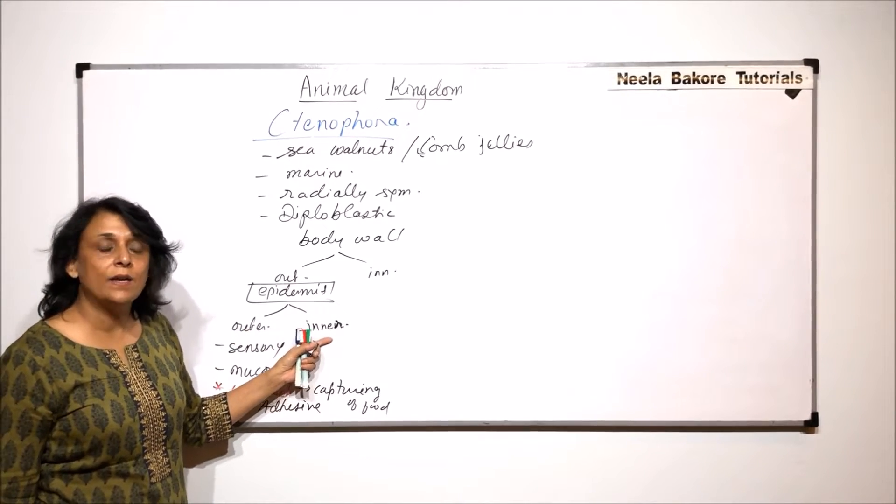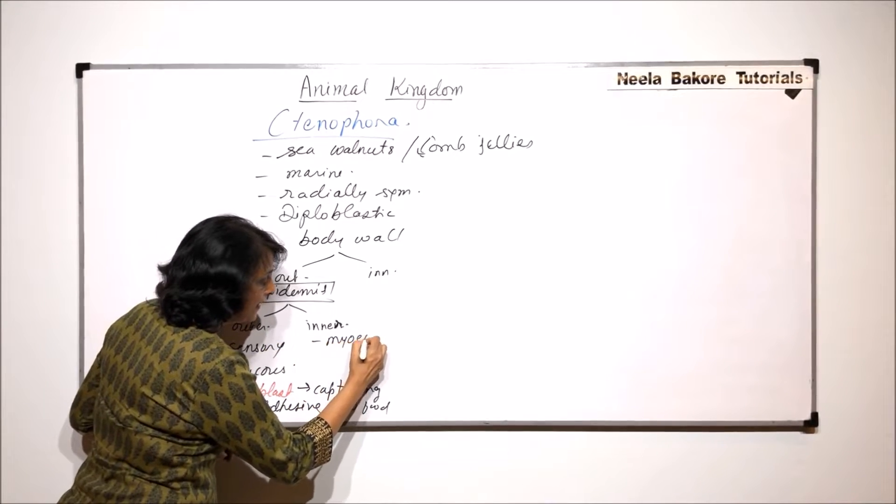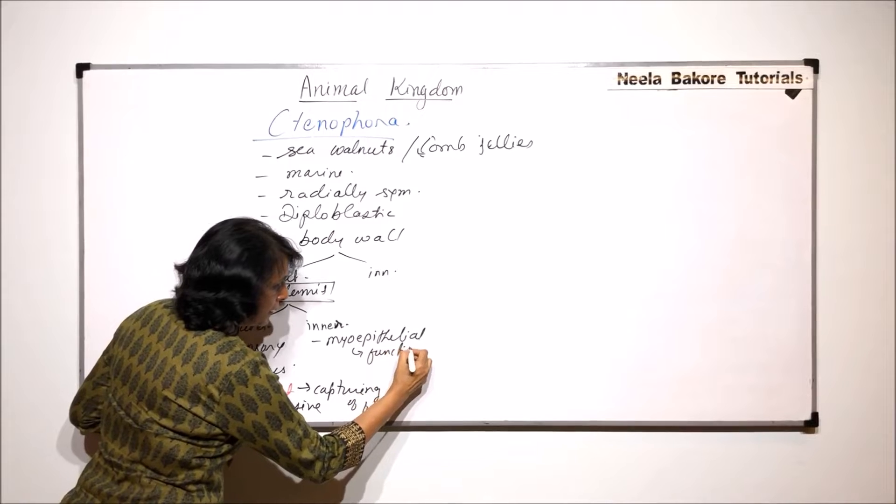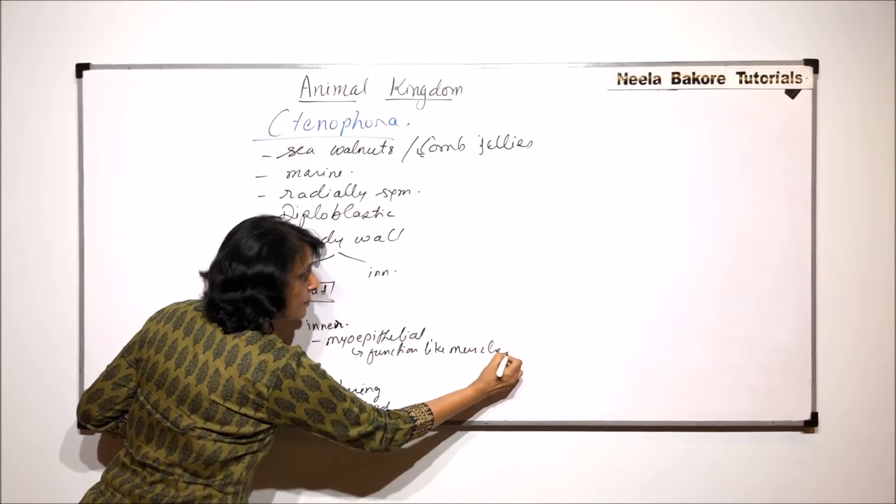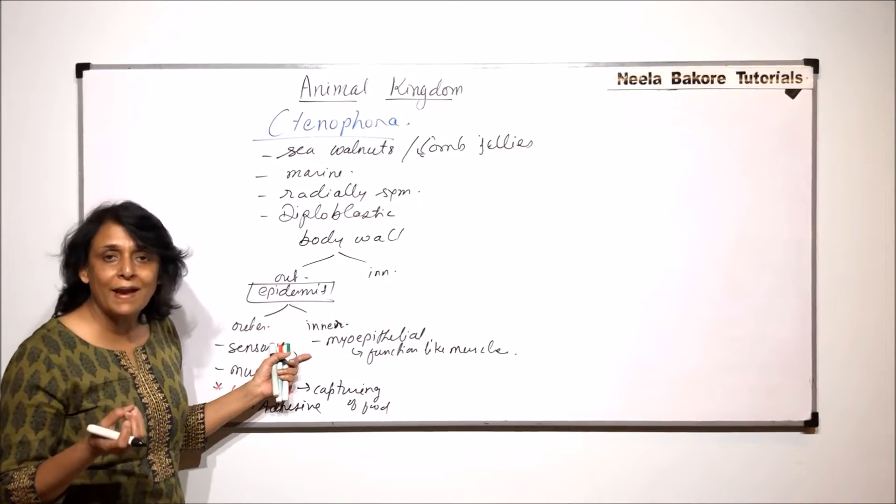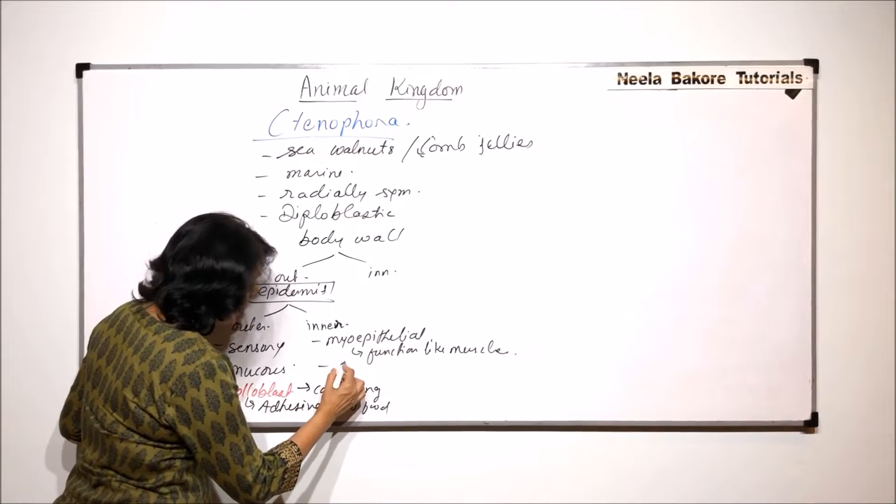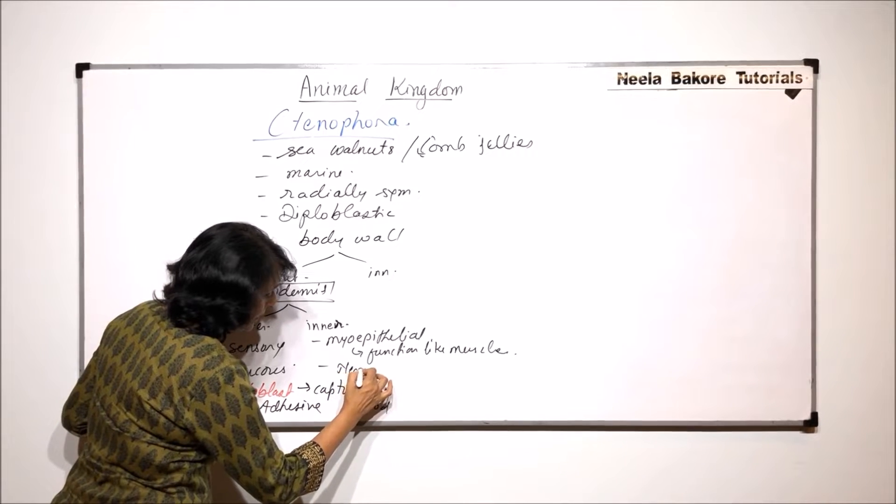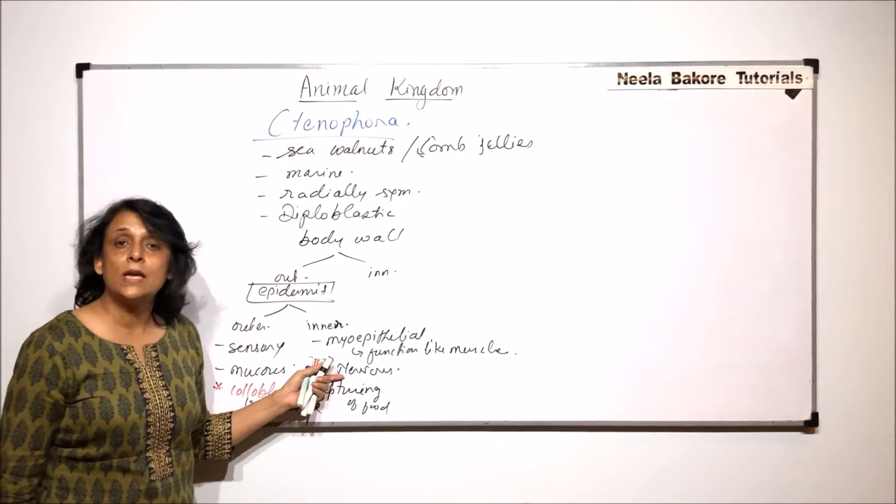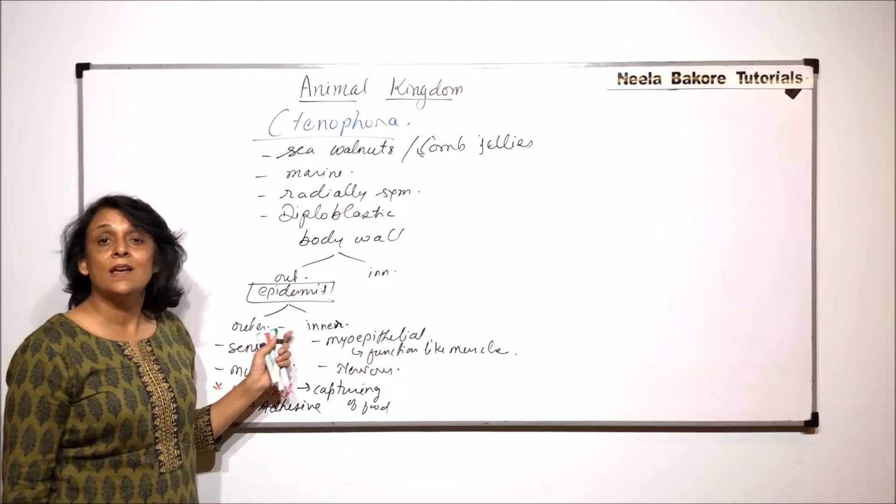The inner epidermis has some cells which are called myoepithelial cells and they function like muscles. They are not muscular cells, they are epidermal cells, but they function - that means they must be doing contraction. And there are some which are the nervous ones. Nervous system is not very well developed. There are sensory fibers which are there, so some cells help in this conduction. So this is the outer layer.